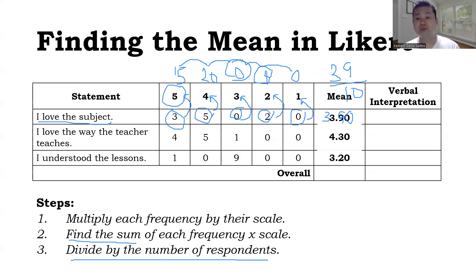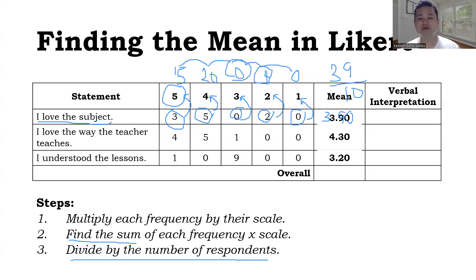Remember, that formula is for finding the mean of each Likert scale statement. How about the overall mean? For the overall mean, all you have to do is add all the individual means: 3.90 plus 4.30 plus 3.20, then divide by how many statements — in this case, 3 statements. The answer is 3.80.